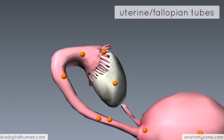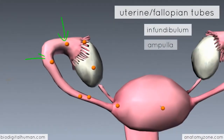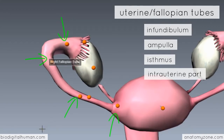The uterine tube has four parts: an infundibulum, an ampulla, an isthmus, and an intrauterine part. You've got the fimbriae, and then the wide distal part is known as the infundibulum. Then we've got the ampulla, which is the middle and longest part of the uterine tube. It's the most common site for fertilisation of the egg by the male sperm — so that's an important point to remember.